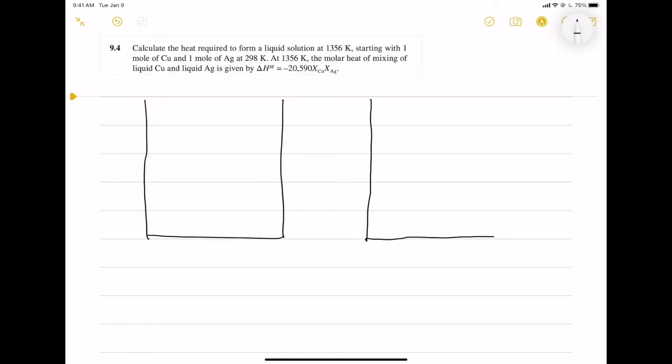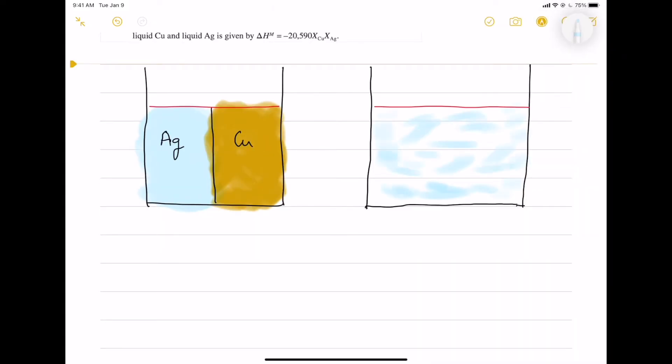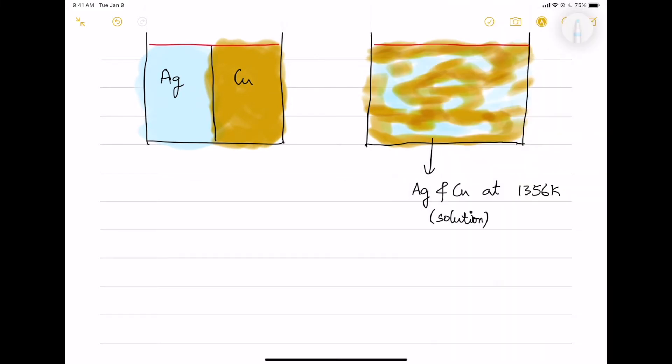In this question, you are given 1 mole of silver and copper heated together from 298 Kelvin to form a melt, it means a solution, at 1356 Kelvin. So here, we need to find the heat required for these solids to become melt from 298 Kelvin to 1356 Kelvin.